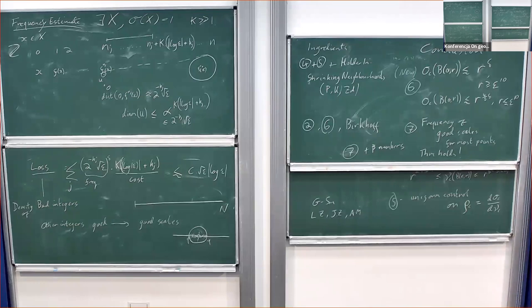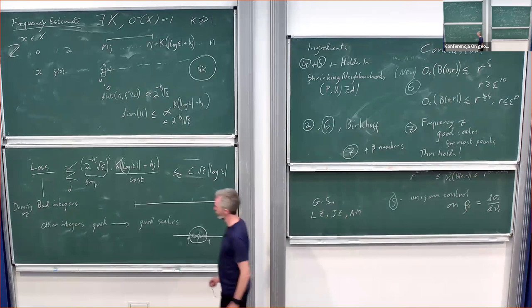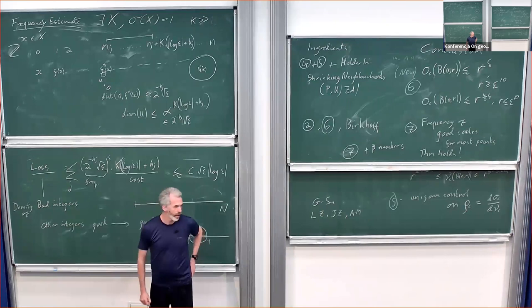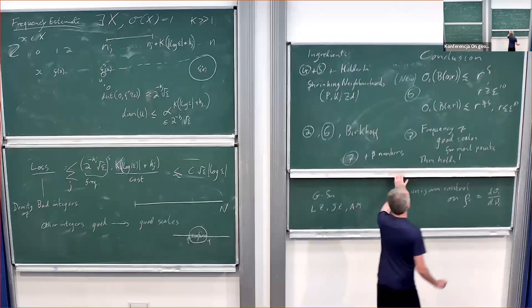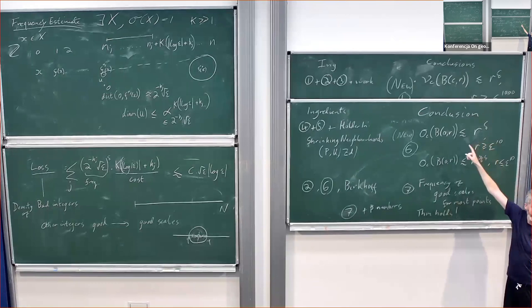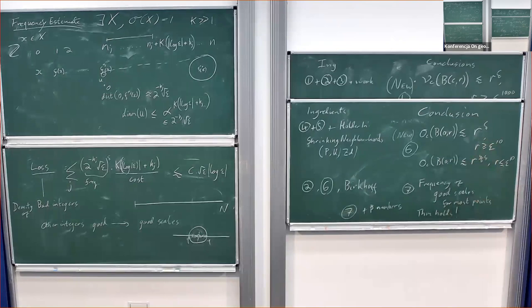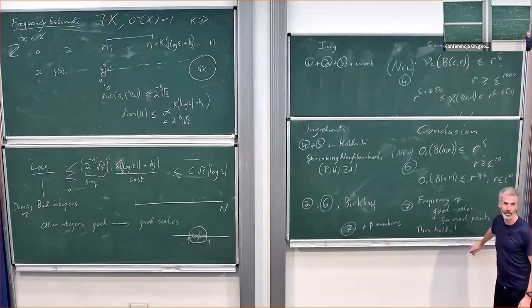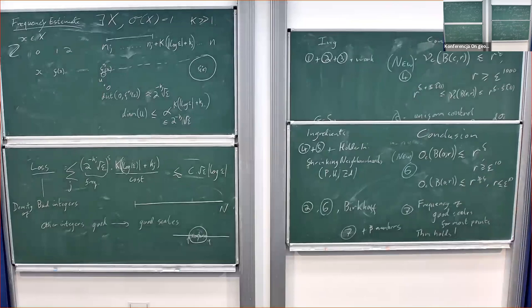Do you get any estimates that work for all Collet-Eckmann maps which then give your results for the specific set, or do you really need this extra structure for the fine estimates of the conformal measure? We do use the starting condition. Somehow uniform Collet-Eckmann means you pass a few times by the central branch but you don't go too deep, so it might still be possible. The epsilon to the power of a thousand does come from the starting condition, and we need at least epsilon squared for our results.